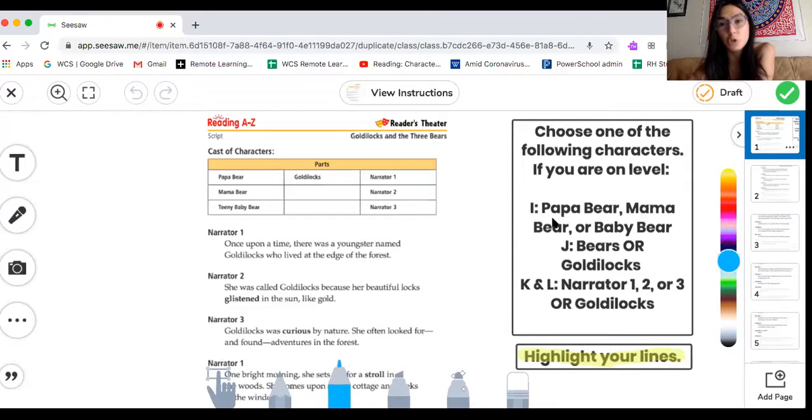Now if you are on a reading level I you can choose to be Papa Bear, Mama Bear, or Baby Bear. If you are on a reading level J you can choose to be one of the bears or Goldilocks. If you are on a level K or L you can choose to be Narrator 1, 2 or 3 or Goldilocks.